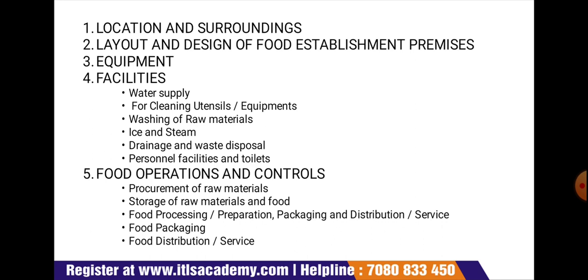Regarding drainage and waste disposal: disposal of sewage and effluent shall be in conformity with the requirements of the factory environment and pollution control board. Adequate drainage and waste disposal systems and facilities shall be provided, designed, and constructed in such a manner that the risk of contaminating food or the potable water supply is eliminated. For personal facilities and toilets: adequate means of proper washing and drying of hands before touching food materials shall be provided, including wash basins with supply of hot or cold water as appropriate, separate lavatories of appropriate hygienic design for male and female separately, adequate changing facilities for personnel, and such facilities shall be suitably located so that they do not open directly into the food processing, handling, and storage area.